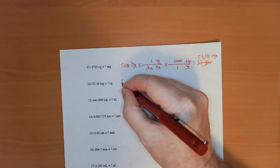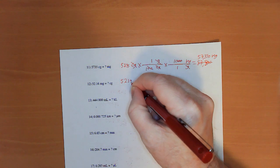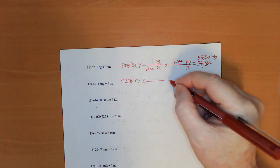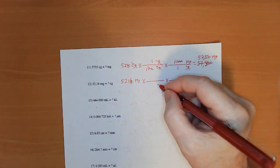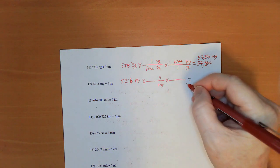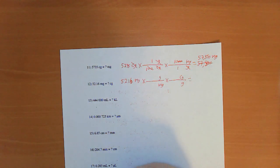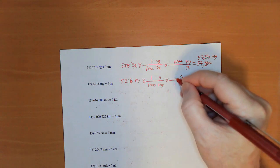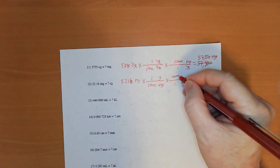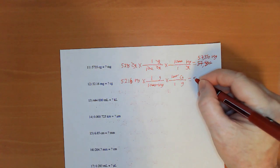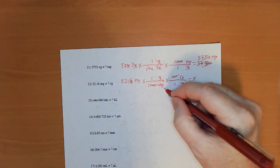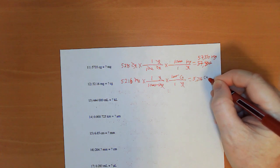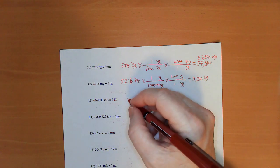Now, here we're going milligrams to centigrams. So, 52.16 milligrams times milligrams to grams. Grams to centigrams. 1,000 milligrams to 1 gram. 1 gram has 100 centigrams. Those two zeros will take off those two zeros. That gram cancels that gram. That milligram cancels that milligram. 5.216 centigrams.